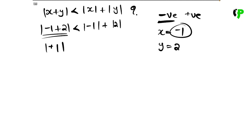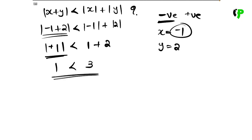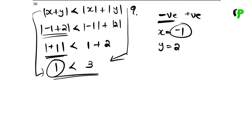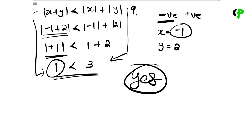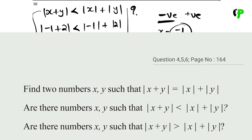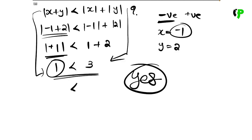Let's check the absolute value. Absolute value of negative 1 plus 2 equals absolute value of 1, which is 1. And 1 plus 2 equals 3. So 1 is less than 3. In all cases with one positive and one negative number, absolute value of x plus y is less than absolute value of x plus absolute value of y.